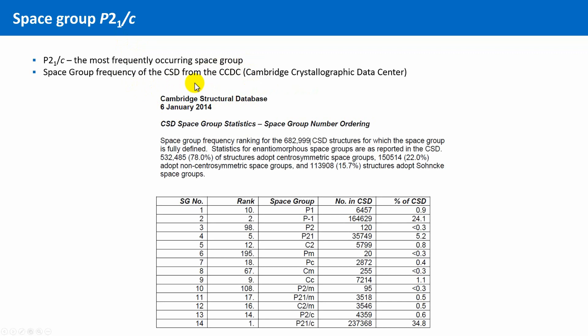Here you see a statistical overview from the CCDC, the Cambridge Crystallographic Data Center. At this center, virtually all of the crystal structures with an organic component are collected and the respective database is named CSD, Cambridge Structural Database. Shortly, it is referred to as the Cambridge file. At the beginning of this year, this database roughly comprised 680,000 crystal structures and 35% of these structures belong to the space group number 14, the space group P21 over C.